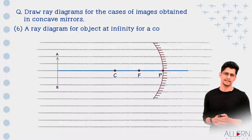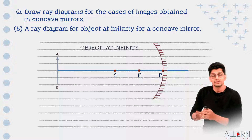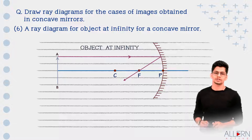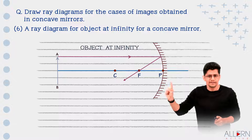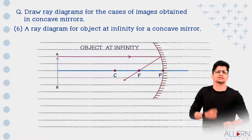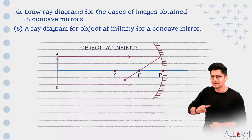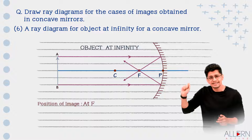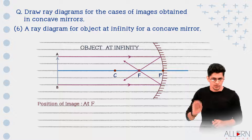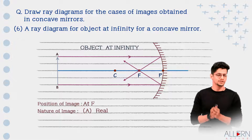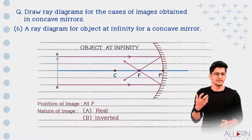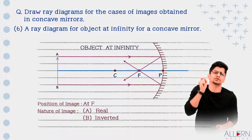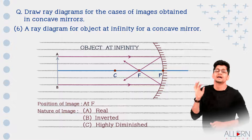For the last diagram, the object is at infinity. Rays of light appear parallel to each other, both parallel to the principal axis. After reflection, both rays pass through the focus, so the image is formed at the focus. Nature: rays are actually meeting — real image, inverted. Size: it is a point-size image, so it is highly diminished.